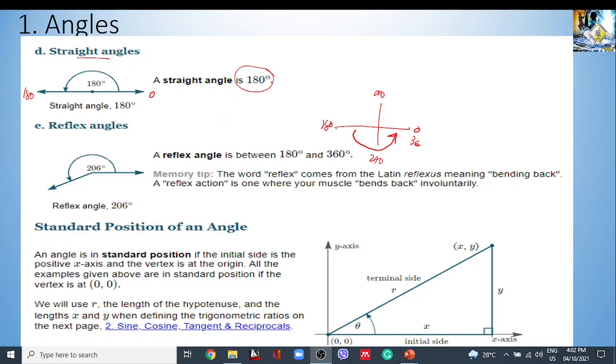What's the memory tip? The word reflex from the Latin word reflexus meaning bending back. So it's obvious because once if you're in 180, you're just exact. Once you go beyond 180, you are bending back. So there's a reason. Reflexus meaning bending back. The reflex action is one where your muscle bends back. For example, if this is our back, this is our pivot point, our lower body. So bending back. So going to 360.